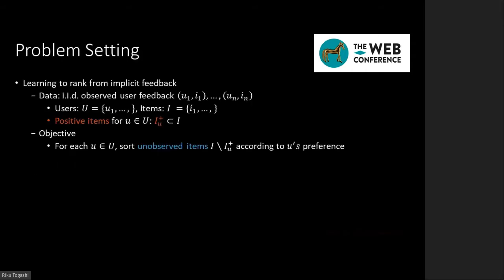In Personalized Item Recommendations, we observe non-IID user feedbacks. Each sample is represented by a pair of user and item. Based on the observed feedback, we construct sets of unique users and items. The set of positive items for each user can be defined as the items that interacted with the user. The objective of Personalized Item Recommendations is to sort unobserved items based on user preference for each user.